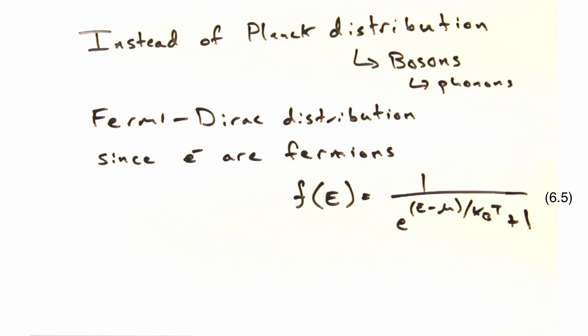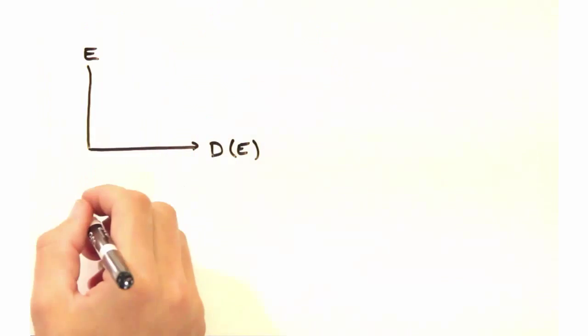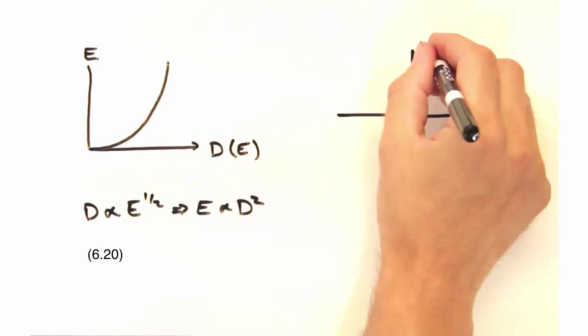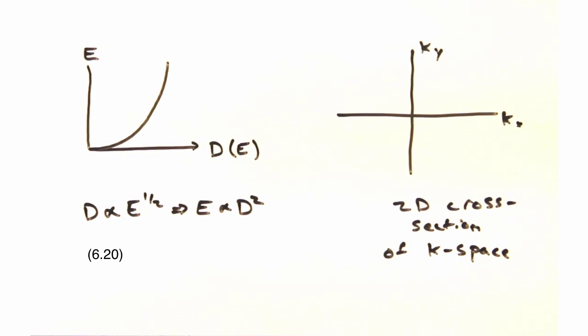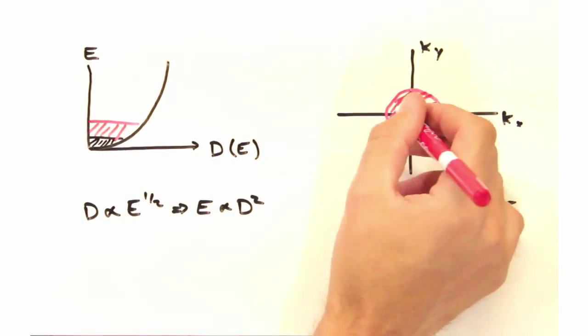to imagine how the states get filled, imagine our density of states is like this massive bucket. When we pour electrons into the system, they'll start by filling in the origin and move out. And no two electrons can occupy the same state.